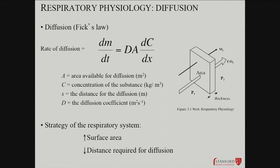The rate of transfer of material turns out to be proportional to the area. The diffusion coefficient — if you've got obstruction, or fibrosis, or mucus, or occlusion of that pathway — that's going to affect your diffusion. And then of course it's the concentration gradients. When you think about evolution and the structure of the respiratory system, you're trying to maximize the surface area and you're trying to decrease the distance that's required.